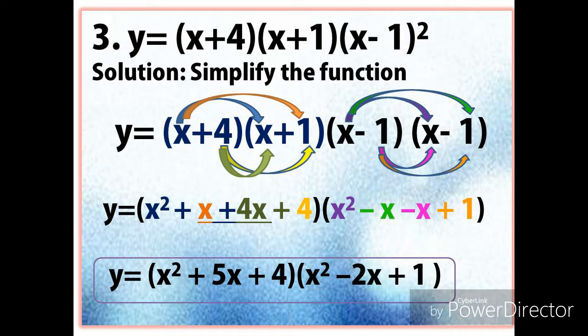Example number three is Y equals (X plus 4) times (X plus 1) times (X minus 1) squared, which is in factored form. We simplify using the distributive property: X times X is X squared, X times 1 is X, 4 times X is 4X, 4 times 1 is 4. Then for the second factor: X times X is X squared, X times negative 1 is negative X, negative 1 times X is negative X, and negative 1 times negative 1 is positive 1.